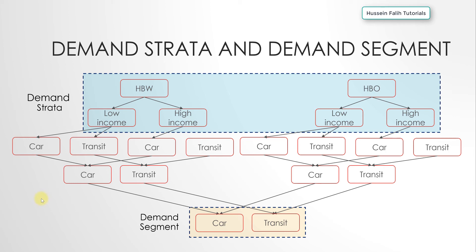From the demand strata we move to the supply side — the road network and the modes. People will use either car or transit, so each demand stratum connects to two modes. The best practice is to aggregate demand strata: low income and high income both end up using car and transit, so they can be aggregated into car and transit.